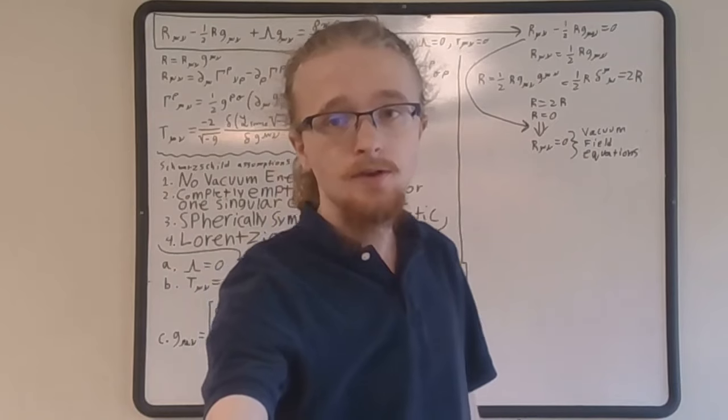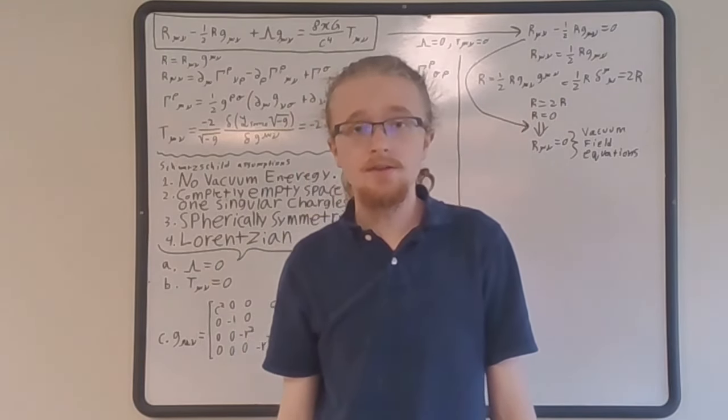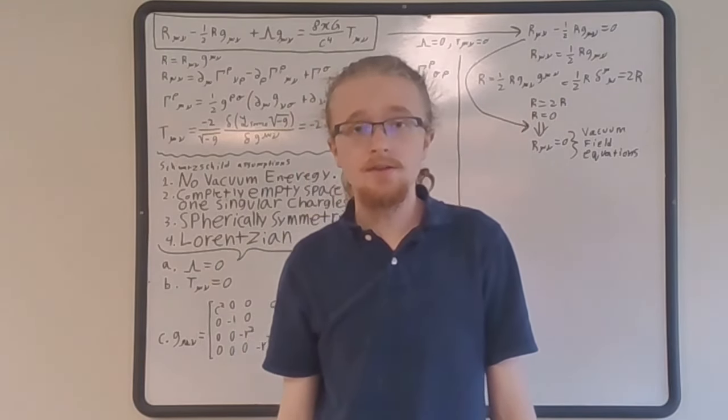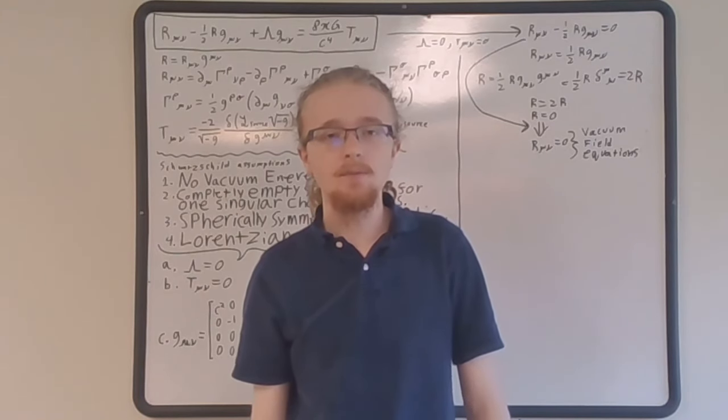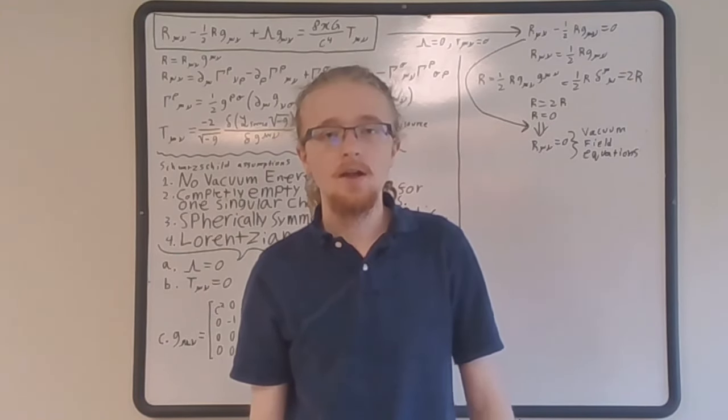In this video I will solve the Einstein field equations for the metric and explain the process as I go. The Schwarzschild metric is the simplest non-trivial solution to the Einstein field equations and was the first non-trivial solution to be found. It is the simplest black hole solution and the simplest Ernst vacuum — describing a vacuum containing only one thing: a Schwarzschild black hole. The vacuum is defined by the following key properties, referred to as the Schwarzschild assumptions: no vacuum energy, completely empty space except for one singular chargeless mass, spherically symmetric and static, and Lorentzian.